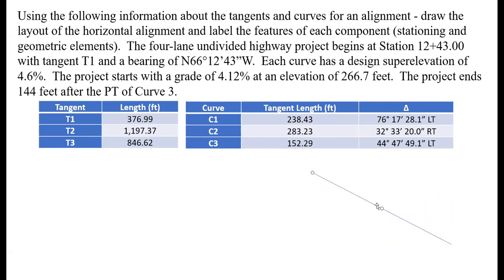Now I'll start with the next line. This is the tangent that comes off curve one, which has a delta of 76°17'28.1" to the left. We need to turn from the end of the first tangent 76 degrees to the left. This would be 90 degrees, so a little bit back from that, something like this.